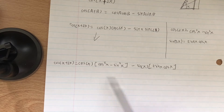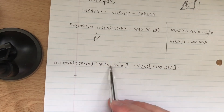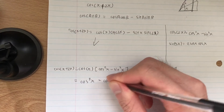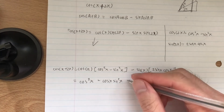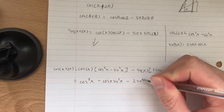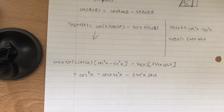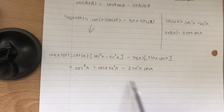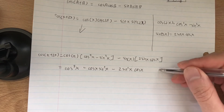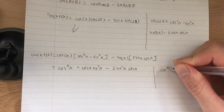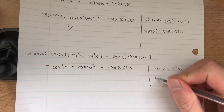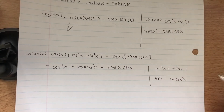Now let's simplify by distributing. Distributing the first term gives cosine cubed x minus cosine x sine squared x. Distributing the second term gives minus 2 sine squared x cosine x. Now we want to write everything in terms of cosine x, so we need to eliminate sine squared x. We use the identity cosine squared x plus sine squared x equals 1, so sine squared x equals 1 minus cosine squared x.